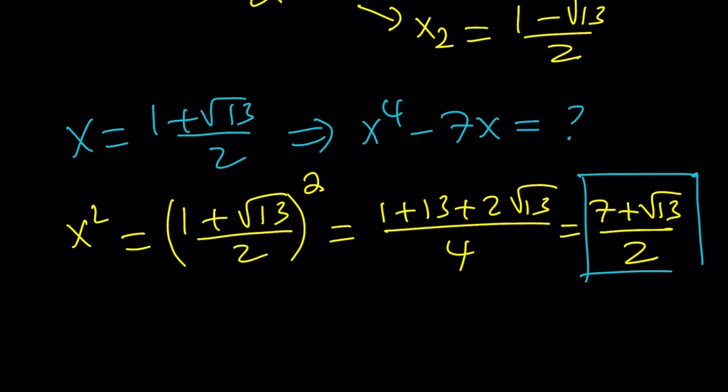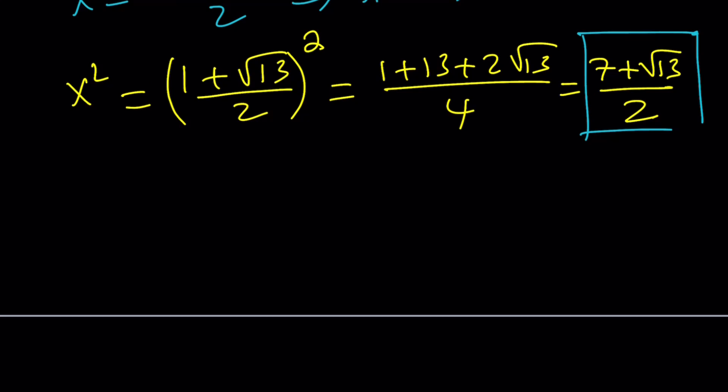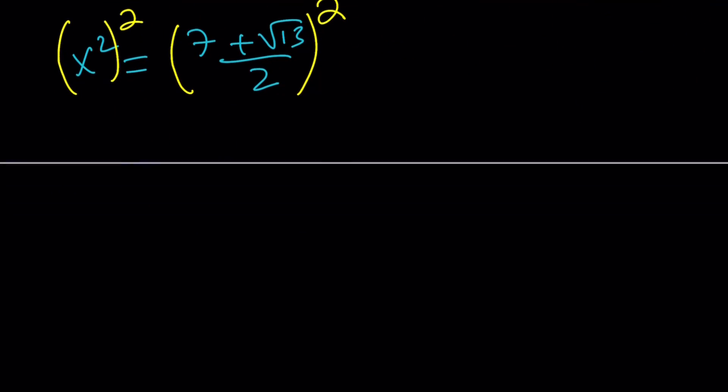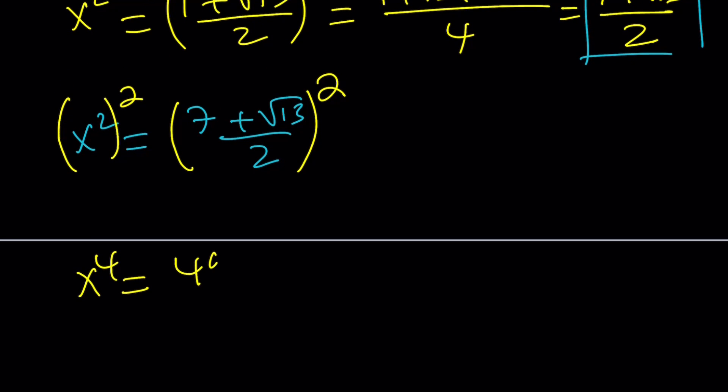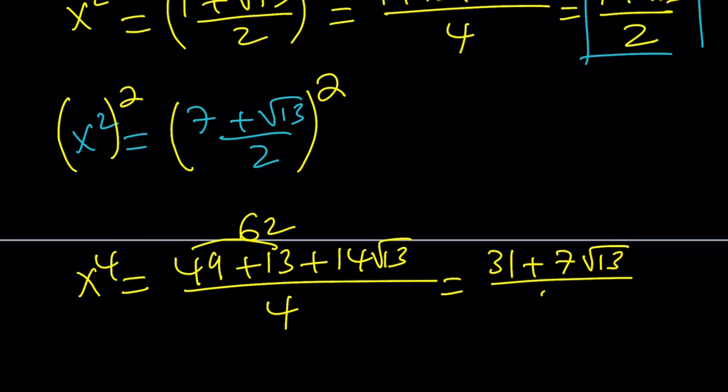Now, to find x to the 4th power, I want to take x squared. And by the way, x squared is 7 plus root 13 over 2 and then square both sides again because that's going to give me x to the 4th power. So x to the 4th power from here is going to be 49 plus 13 plus 14 root 13 divided by 4. This is going to be 62. If you cut things in half, you're going to get 31 plus 7 root 13 divided by 2. And that will be x to the 4th power.